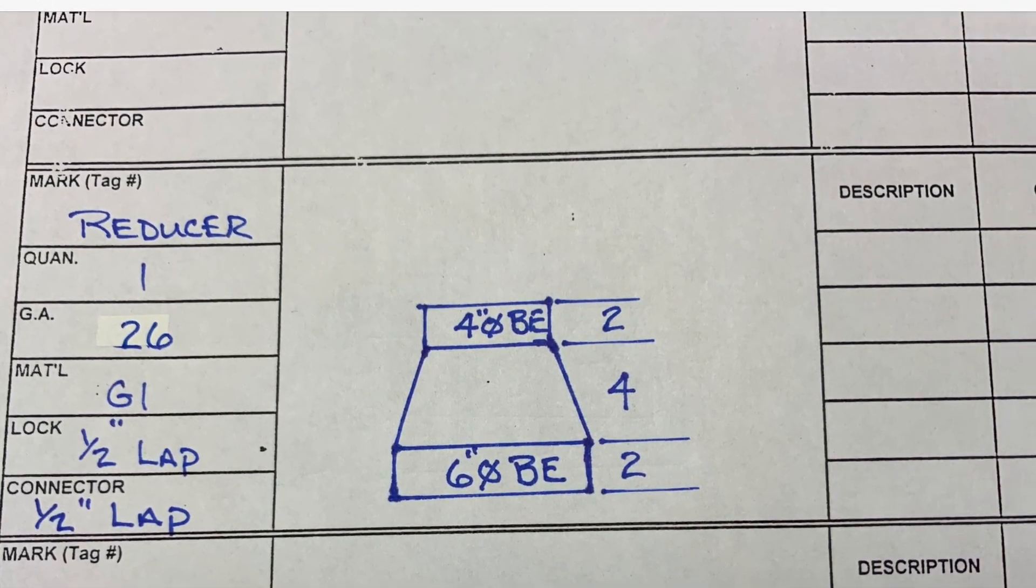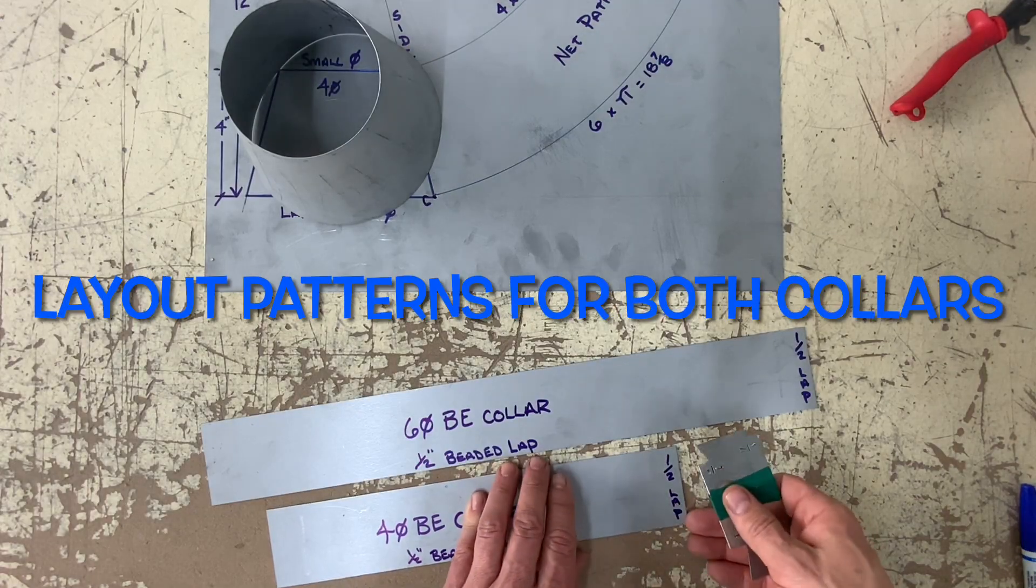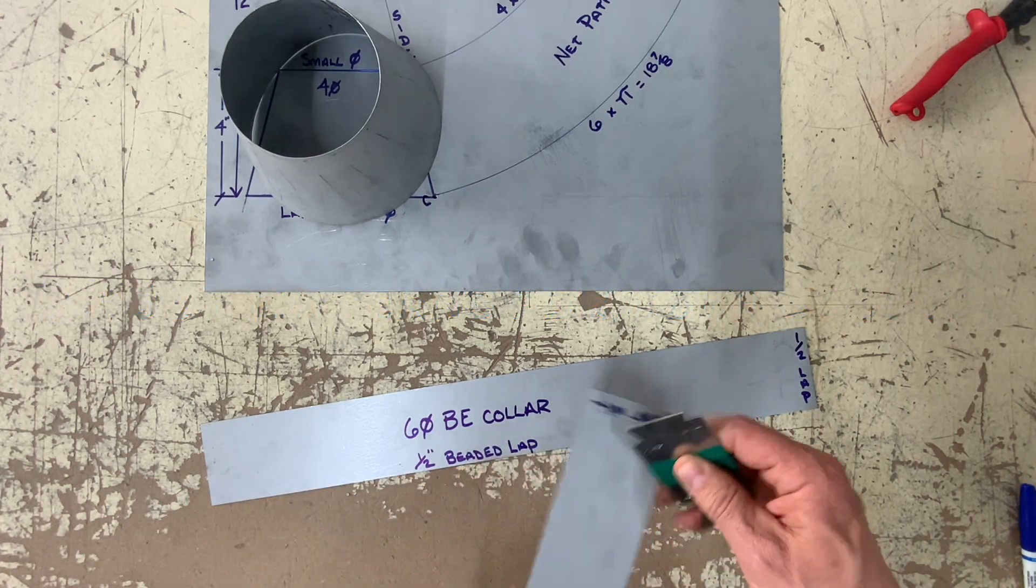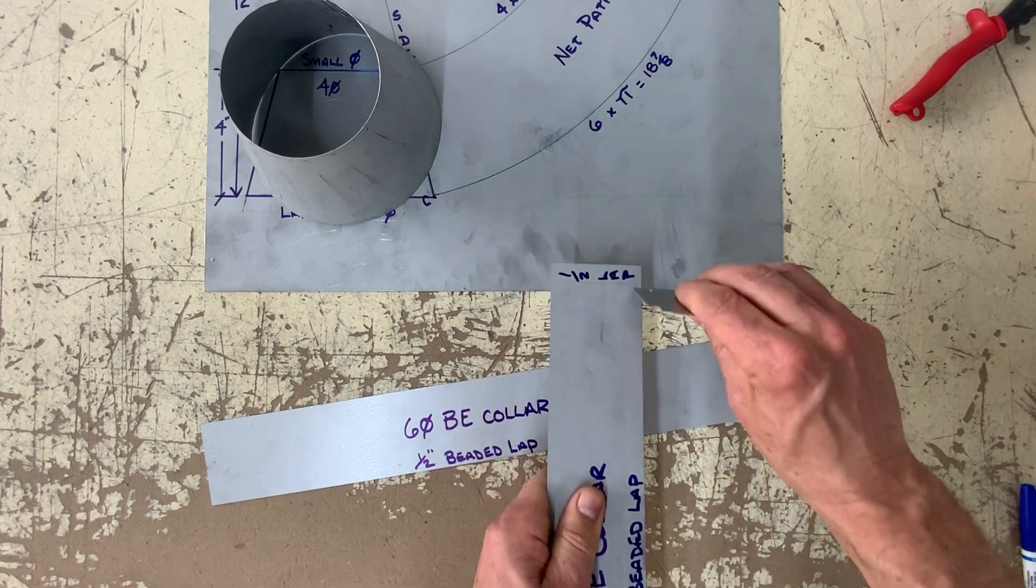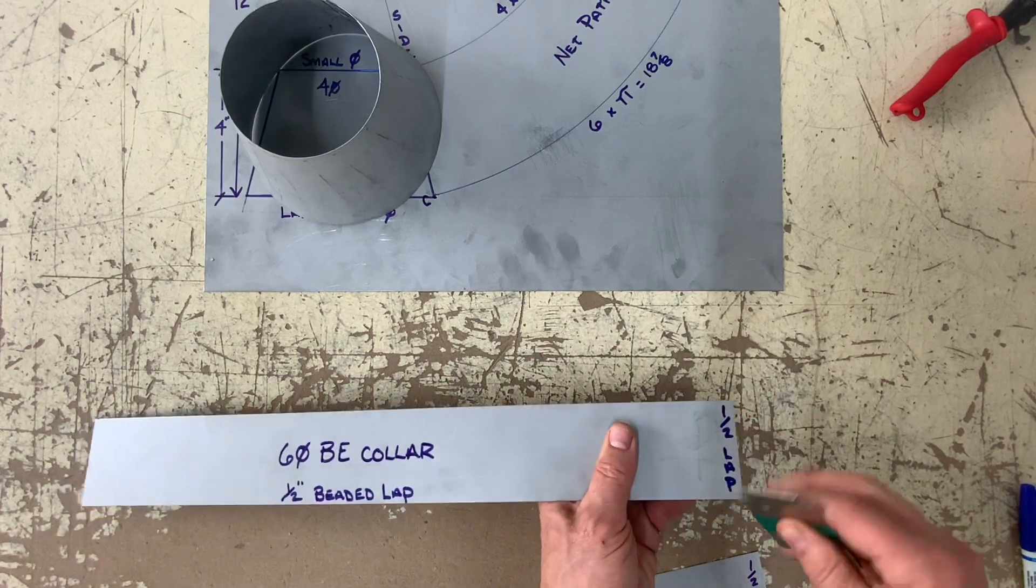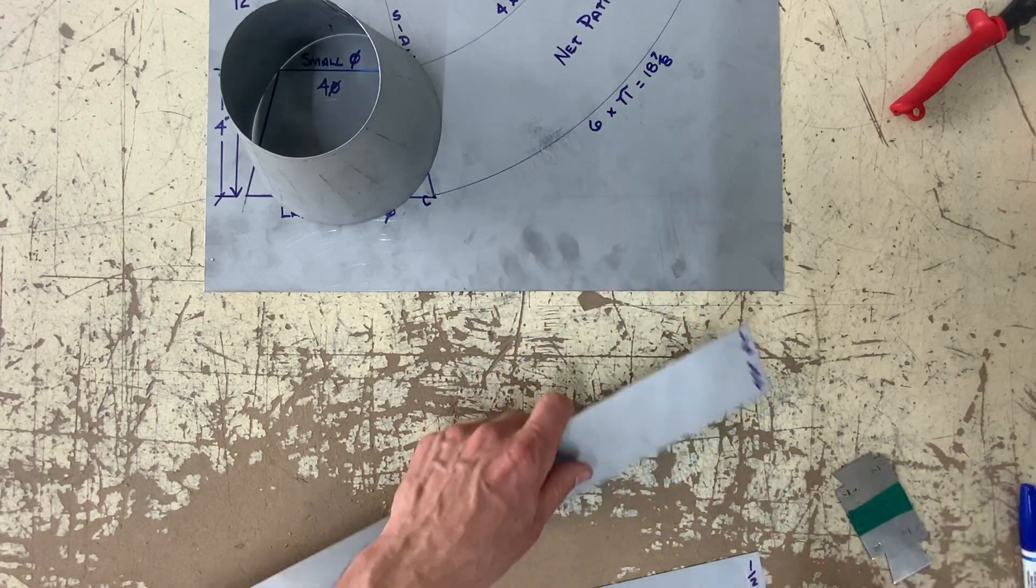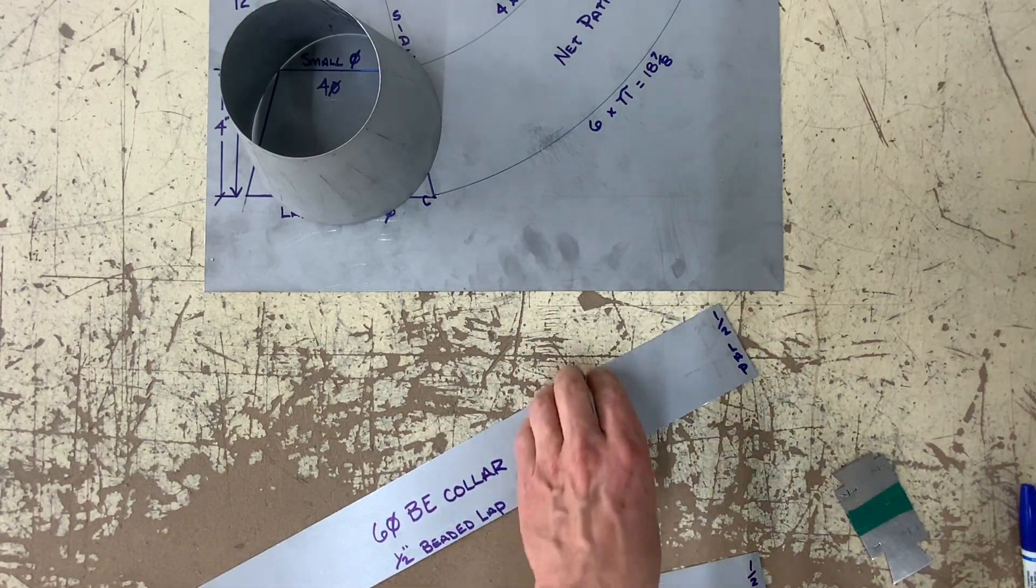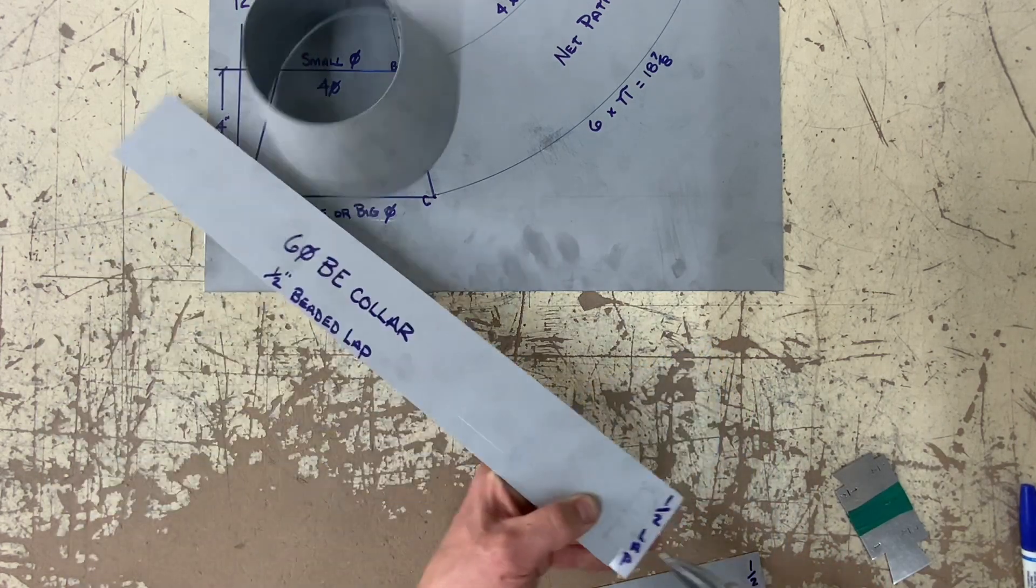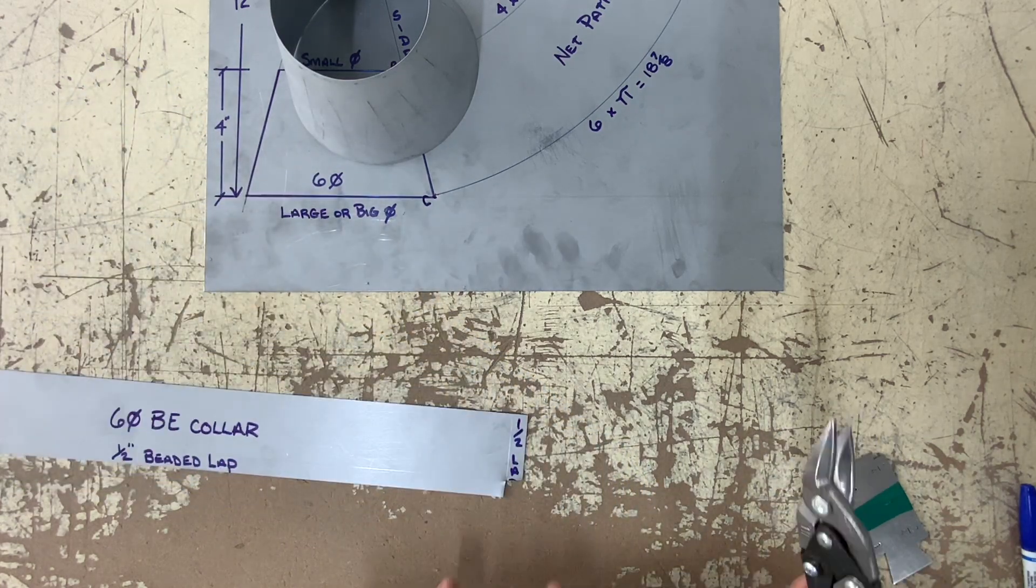Now we need to make two collars to add to the frustrum. These two collars are big end collars because the shop ticket indicated big end. So here I have chosen a half inch lap seam and a half inch beaded lap seam for connectors. So the stretch out would be six times pi plus a half for the large one, and four times pi plus a half for the smaller one.